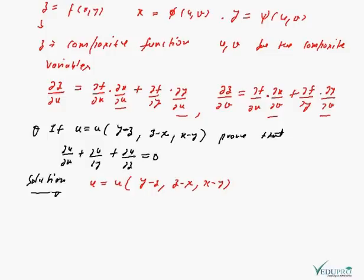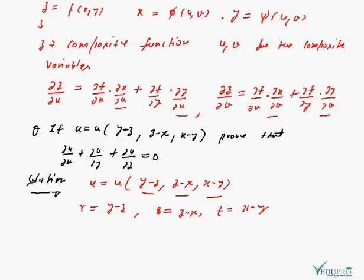In this question, u is the function of (y−z), (z−x), (x−y). There is a function within a function. We cannot determine u directly — we can say it is a function of x, y, z, but there is a function inside a function. This type of question we can solve using total partial differentiation. Using composite function and composite variable terms, if we take: r = y−z, s = z−x, t = x−y, then u becomes a function of r, s, t.